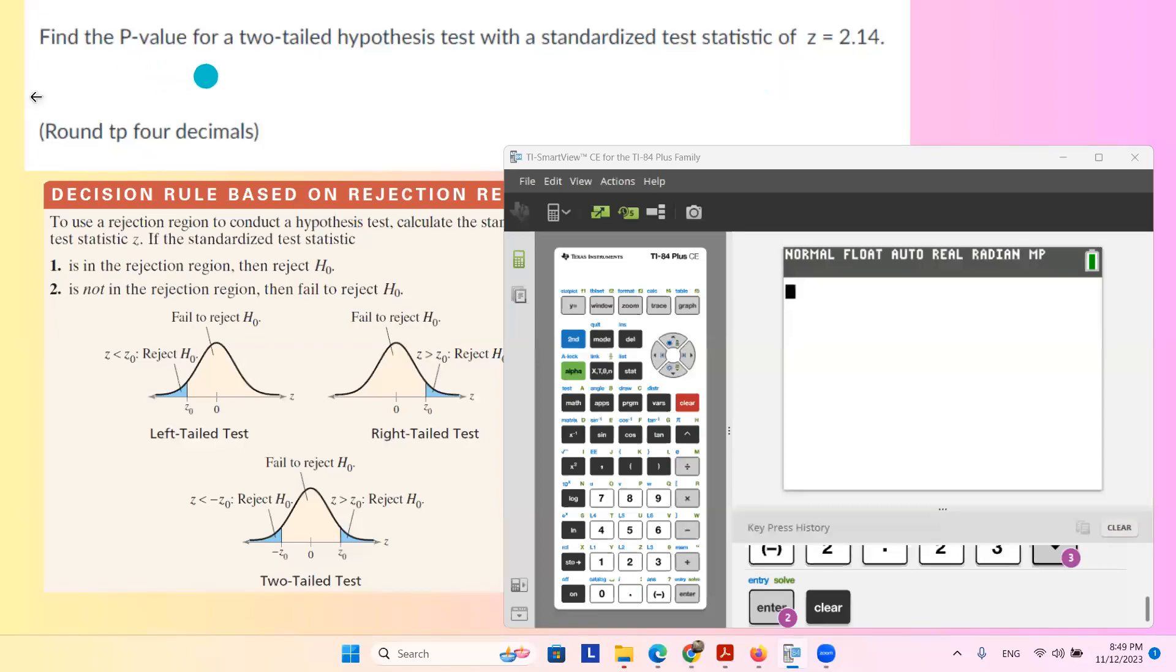In this question we want to find the p-value for a two-tailed hypothesis test, the standardized test statistic z equals 2.14. Please note that you have a two-tail test.